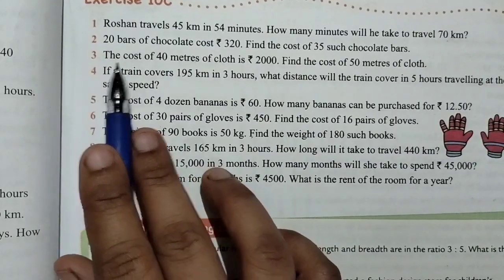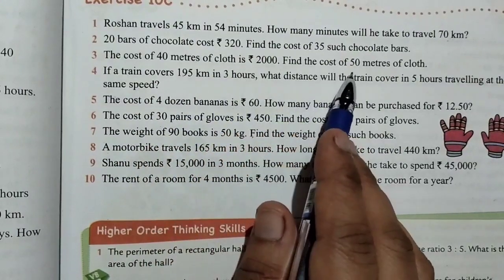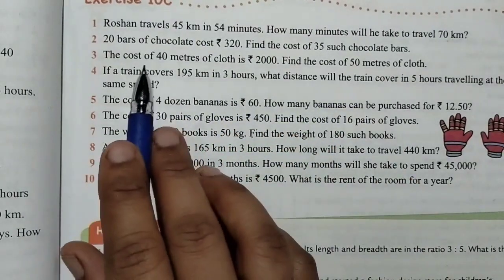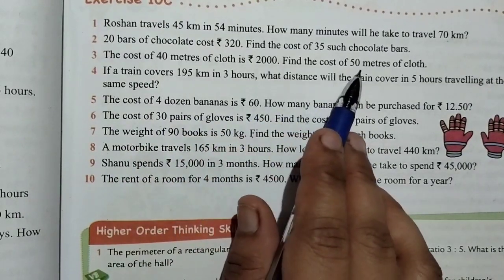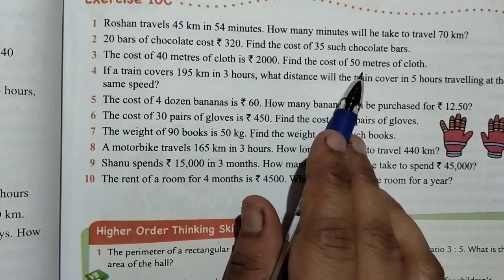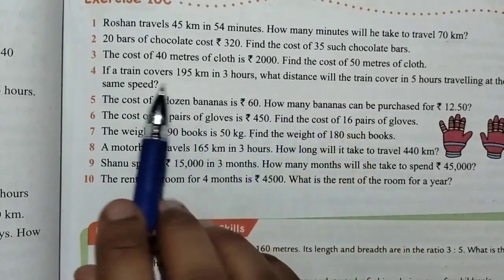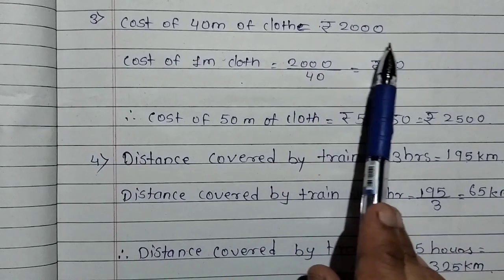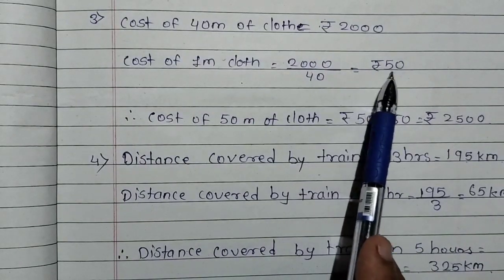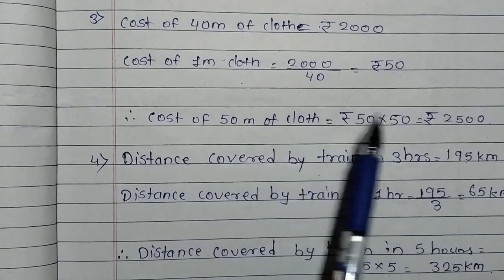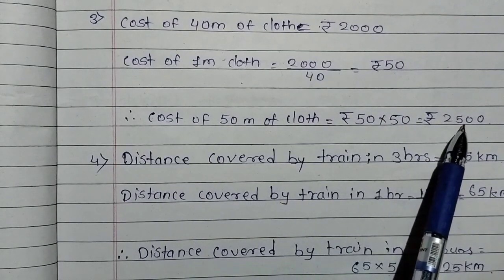Question number 3: The cost of 40 meters of cloth is Rs.2000. Find the cost of 50 meters of cloth. The cost of 40 meters is Rs.2000, so the cost of 1 meter is 2000 divided by 40. Then for 50 meters, we multiply by 50, and the answer is Rs.2500.